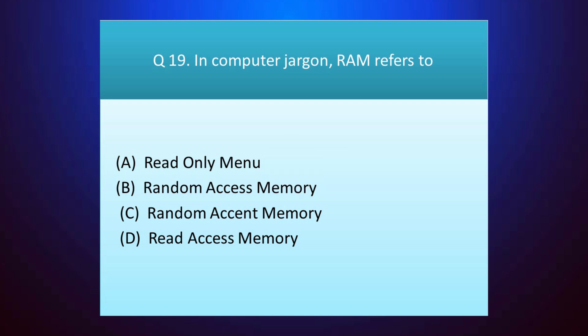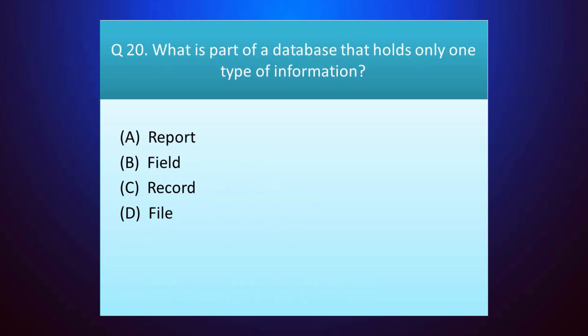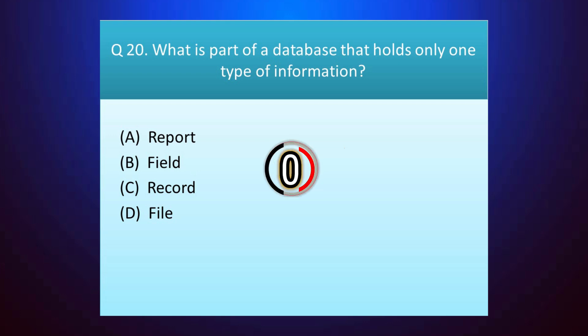The answer is option B — random access memory. Question number twenty: what is a part of a database that holds only one type of information? Your time starts. The answer is option B — file.